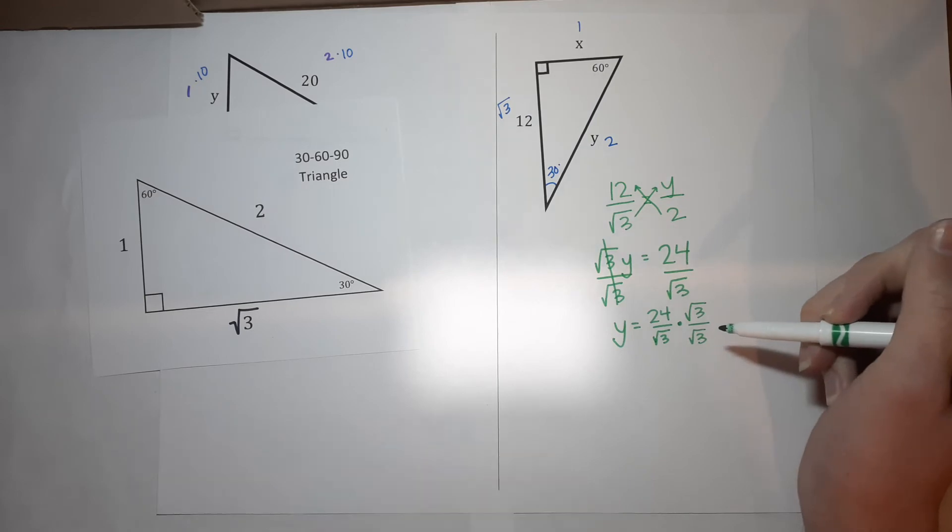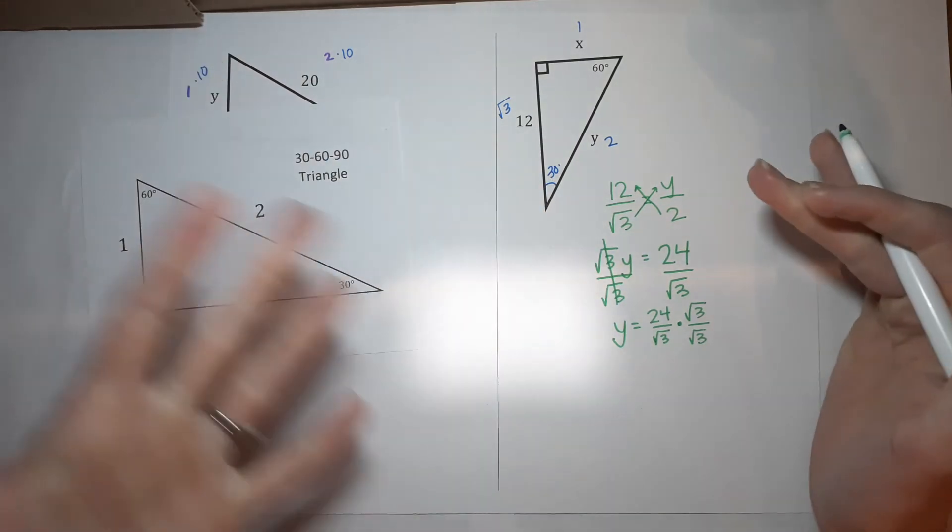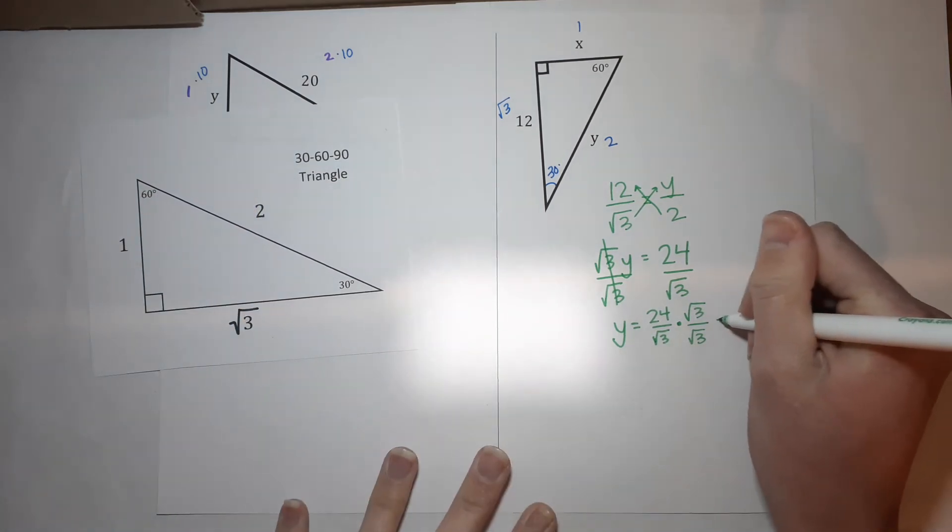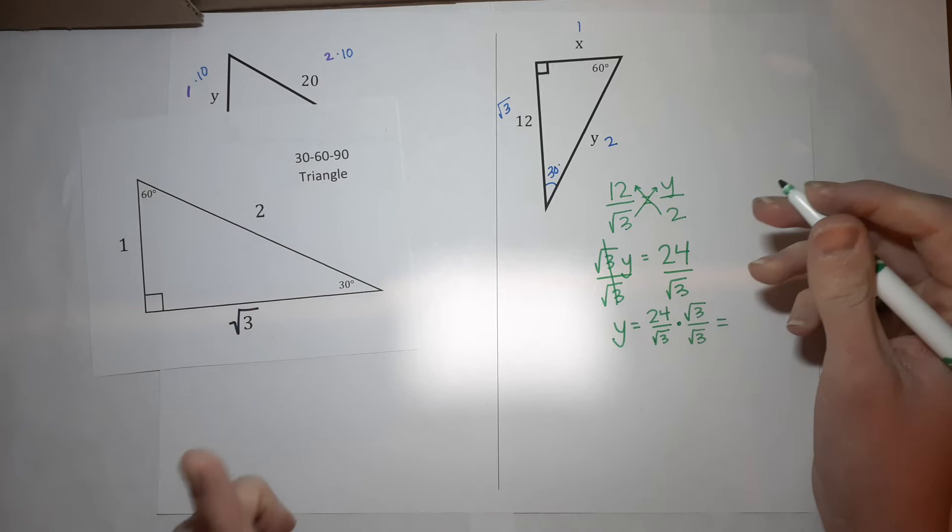Well, I'm going to multiply by the square root of 3 over the square root of 3. Why am I allowed to do that? Well, because the square root of 3 over the square root of 3 simplifies down to 1. So it's just like I'm multiplying by 1.